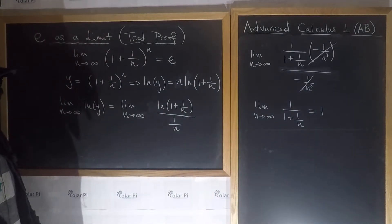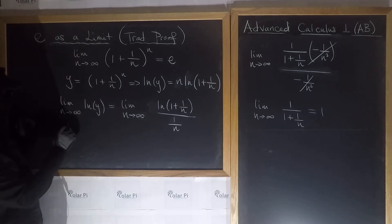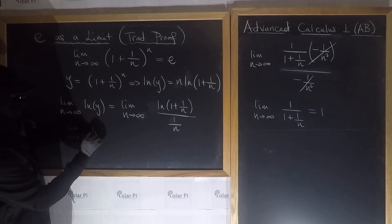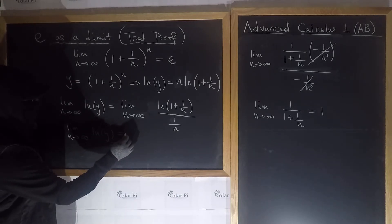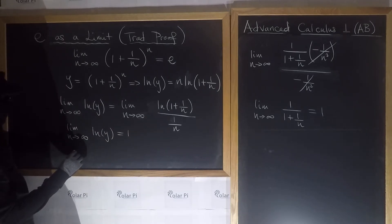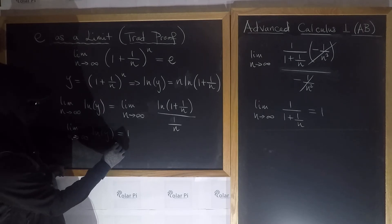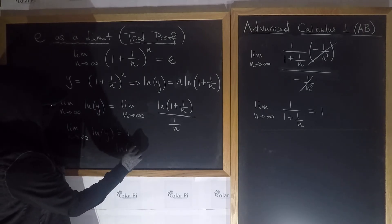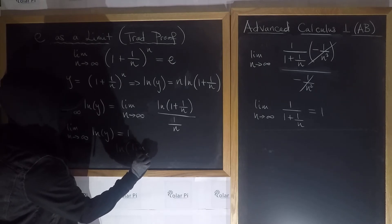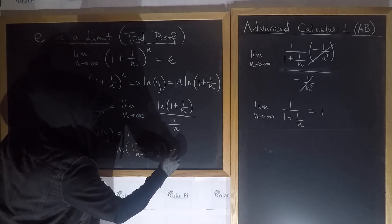But wait, that 1 is the same as this limit, so what we have is lim as n goes to infinity of ln(y) is equal to 1. And now using limit rules, I could write this, which is ln of lim as n goes to infinity of y equals 1.